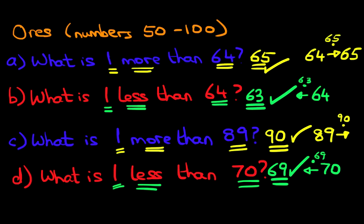Now you can do all the workings out that we're doing over here, but once you get the hang of this you won't need to do this. You'll be able to look at the question and simply say: the number in this case is 70, we're going back by 1, and therefore the answer is 69. It just requires practice, and then you'll be able to do this very, very fast. So that is more than and less than of 1s from numbers 50 to 100.